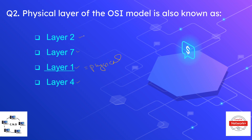Layer one is the physical layer, while layer two is also called the data link layer, layer seven is the application layer, and layer four is the transport layer.